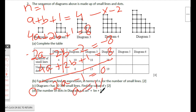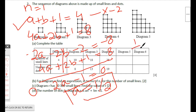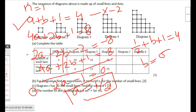Substituting a = 1/2 back into a + b + 1 = 4: 1/2 + b + 1 = 4, solving gives b = 5/2, or two and a half. So a = 1/2 and b = 5/2 are the answers for part d.